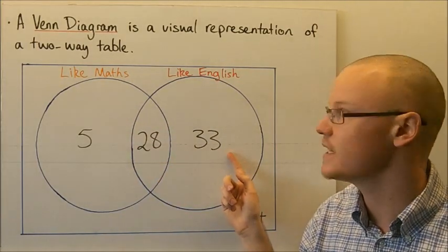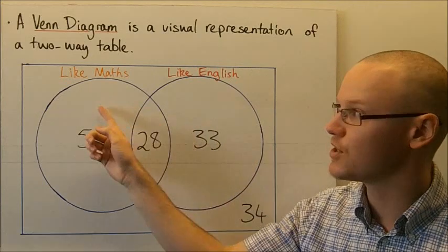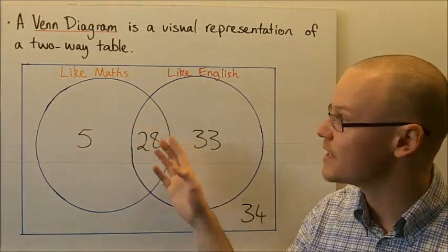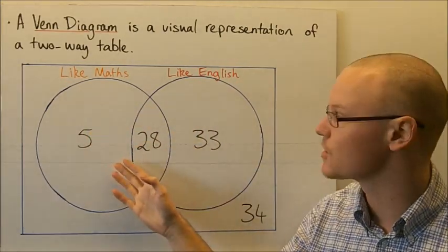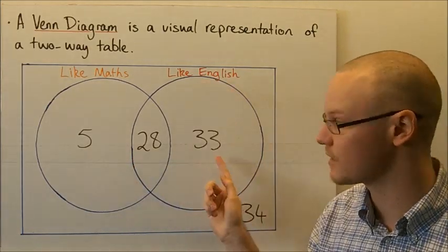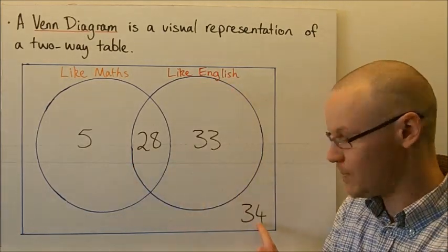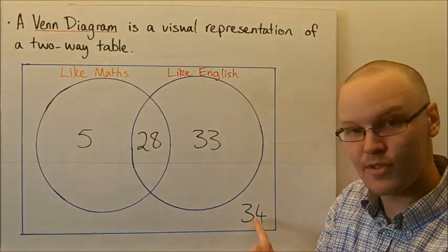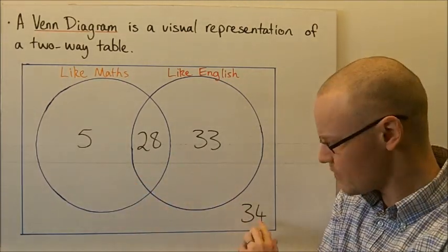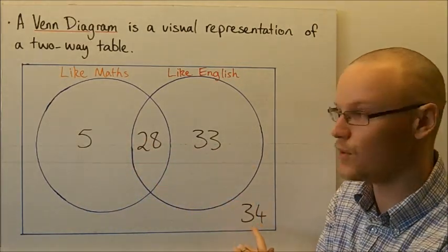The number 33 shows the students who like English but don't like Maths — they're outside the Maths circle, just part of the liking English circle. And the number in the bottom corner is the number of students who aren't part of either circle — they do not like Maths or English: 34.